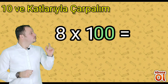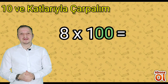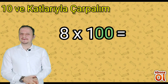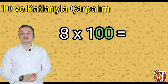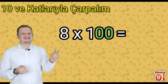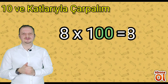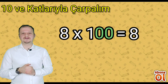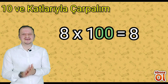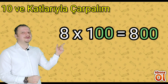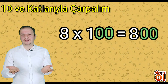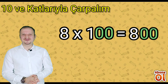Şimdi de 100 ile 8'i çarpalım. Biliyorsunuz 100, 3 basamaklı bir sayıdır; 8 ise 1 basamaklı bir sayıdır. Olsun, hiç önemli değil; kuralımız hepsinde aynıdır. 8'i çarpım bölümüne ekliyoruz. 100'de kaç tane sıfır vardı? 2 tane sıfır vardı. 2 sıfırı 8'in sağına ekliyoruz. Sonuç nedir? 100 çarpı 8, yani 8 çarpı 100, 800'dür.